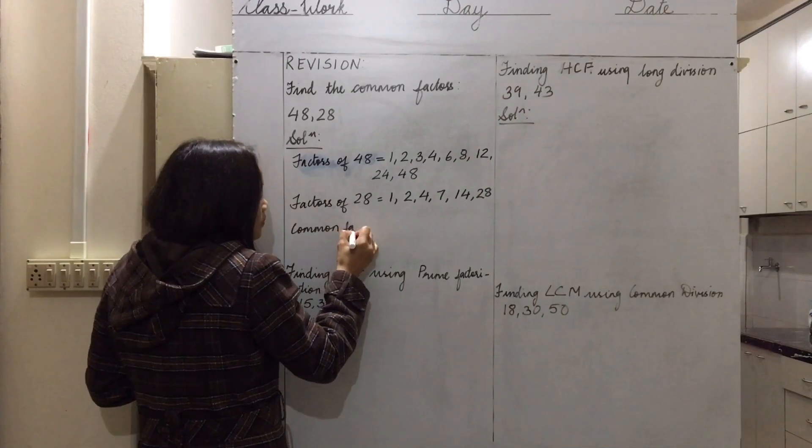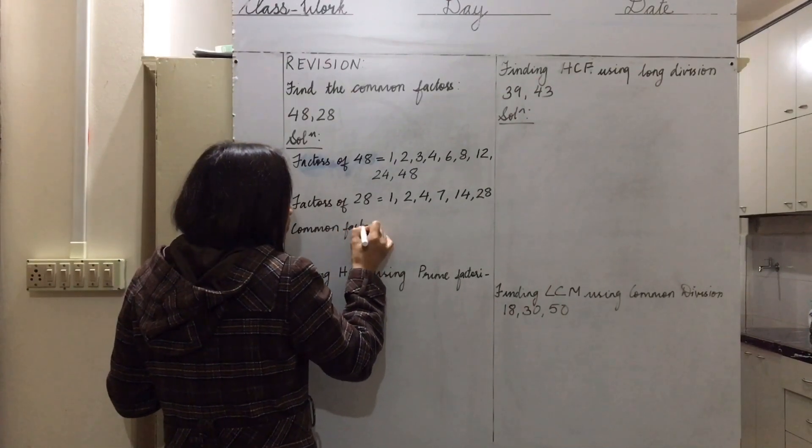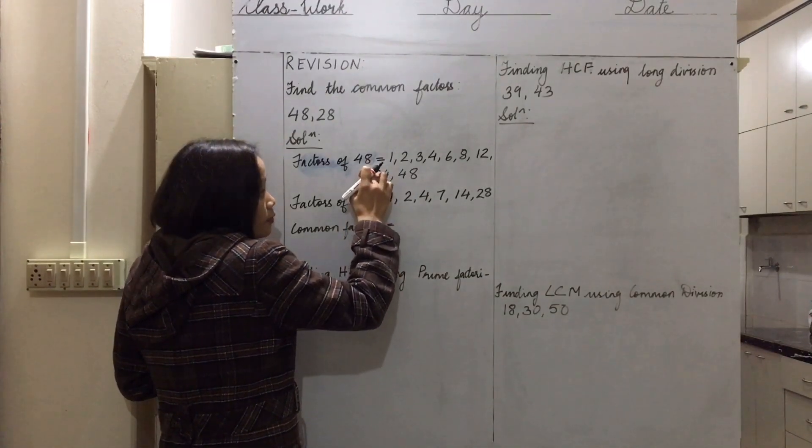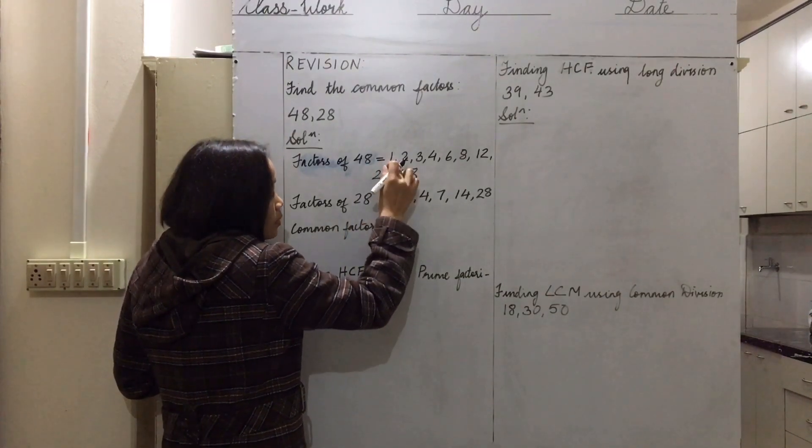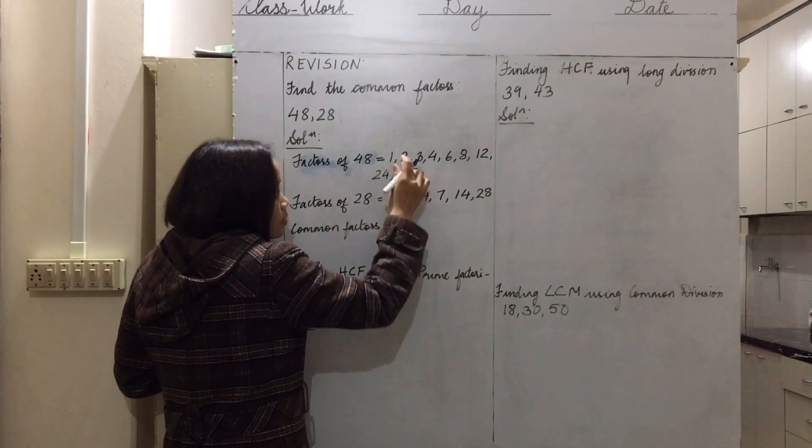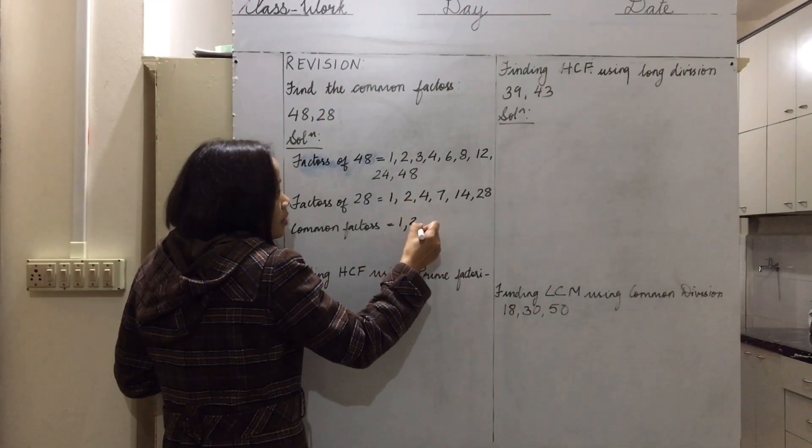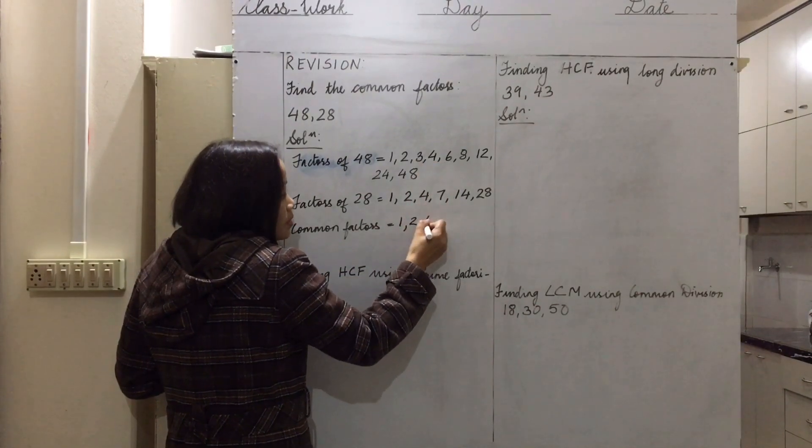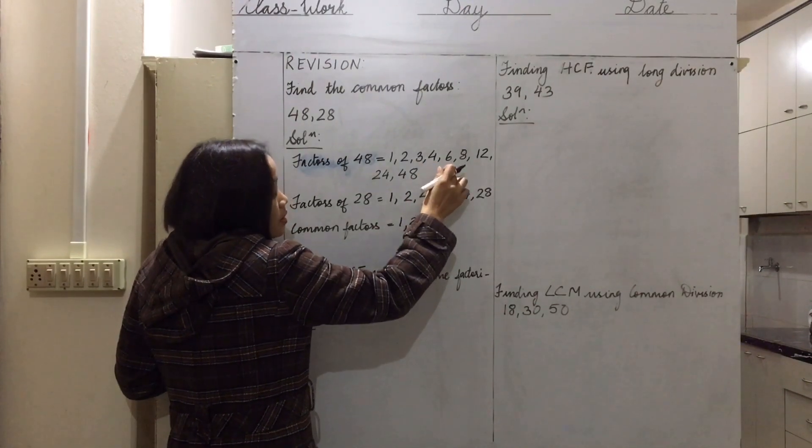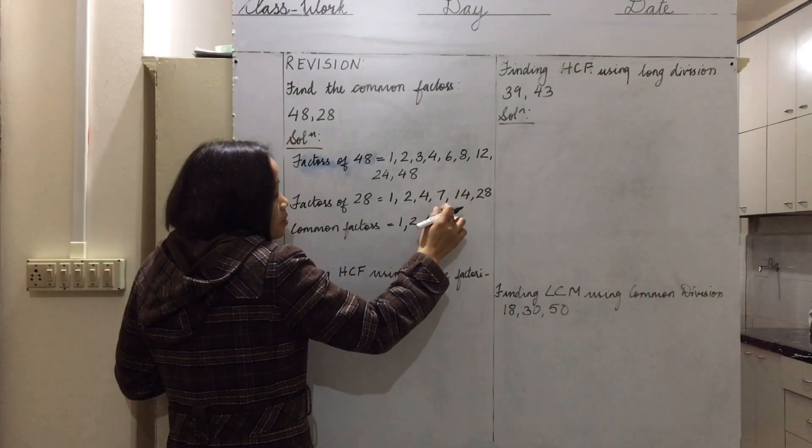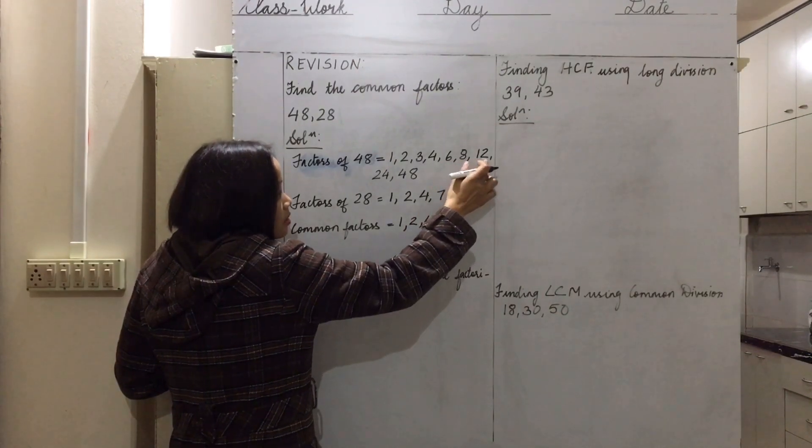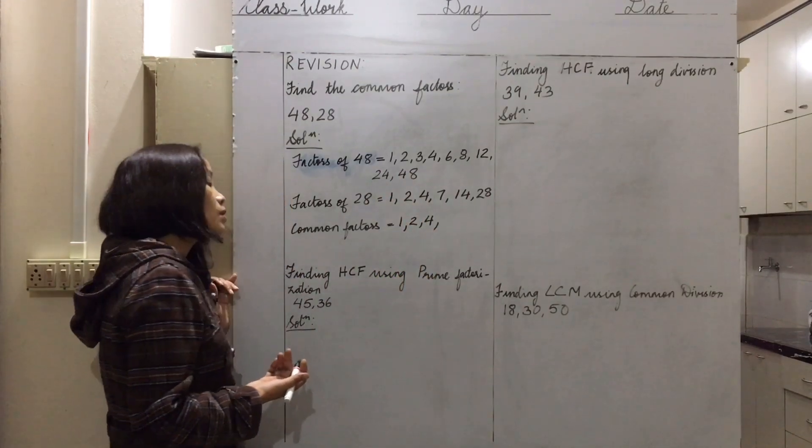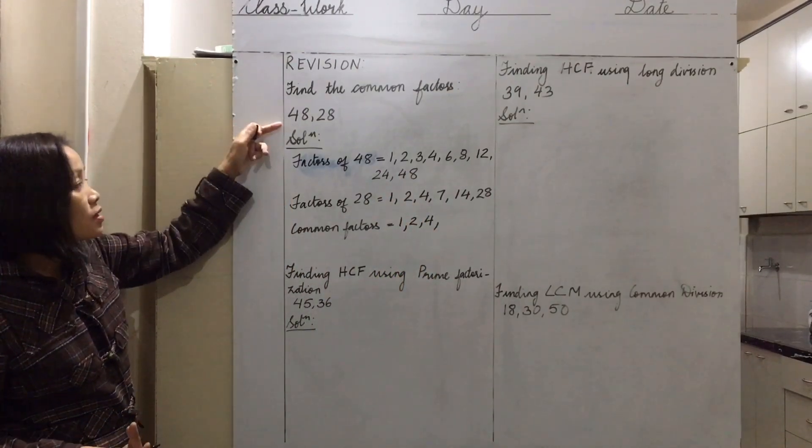What are the common factors of 48 and 28? The factors that are present in both 28 and 48: one, two, four. No more common factors, so the common factors of 48 and 28 are 1, 2, and 4. This is our answer.